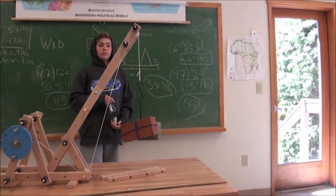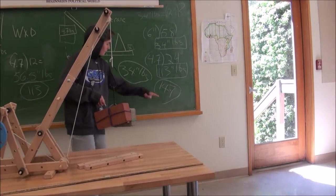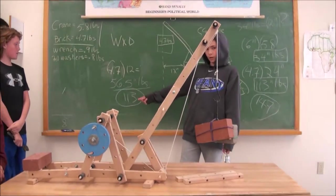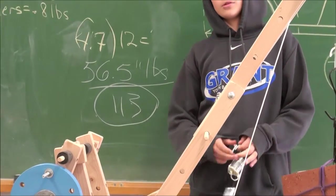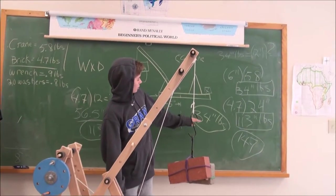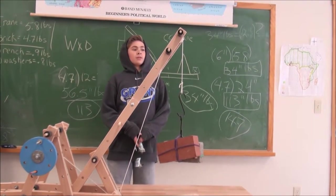The difference between the torque—we've got 147 inch pounds on one side. That's the crane. And the load is 113. So right now, it's good. Technically, we could add 34 more inch pounds of weight to the load and it would still be perfectly balanced.